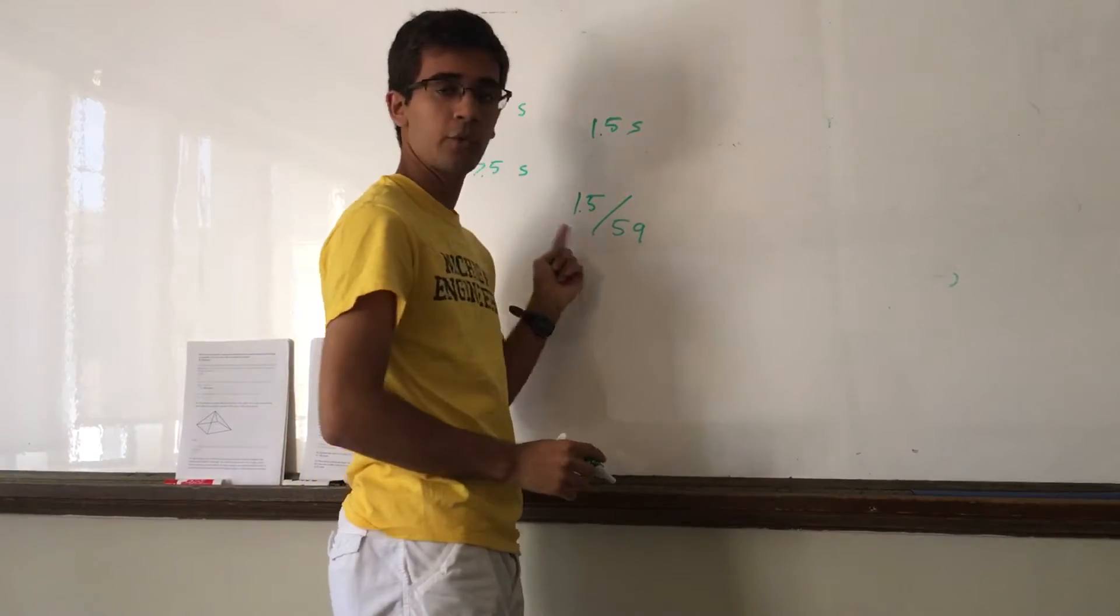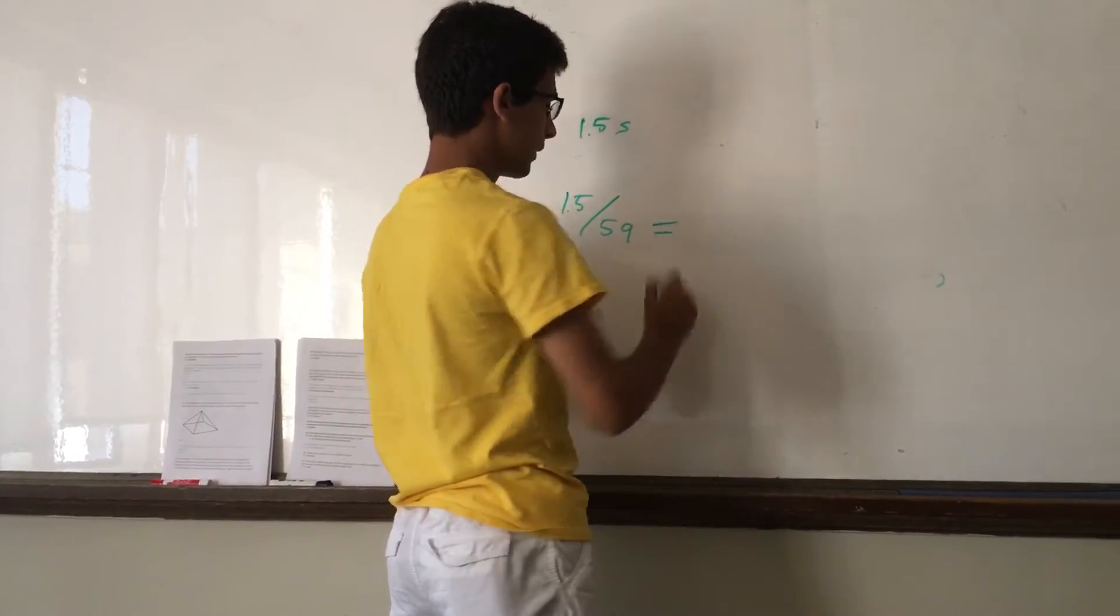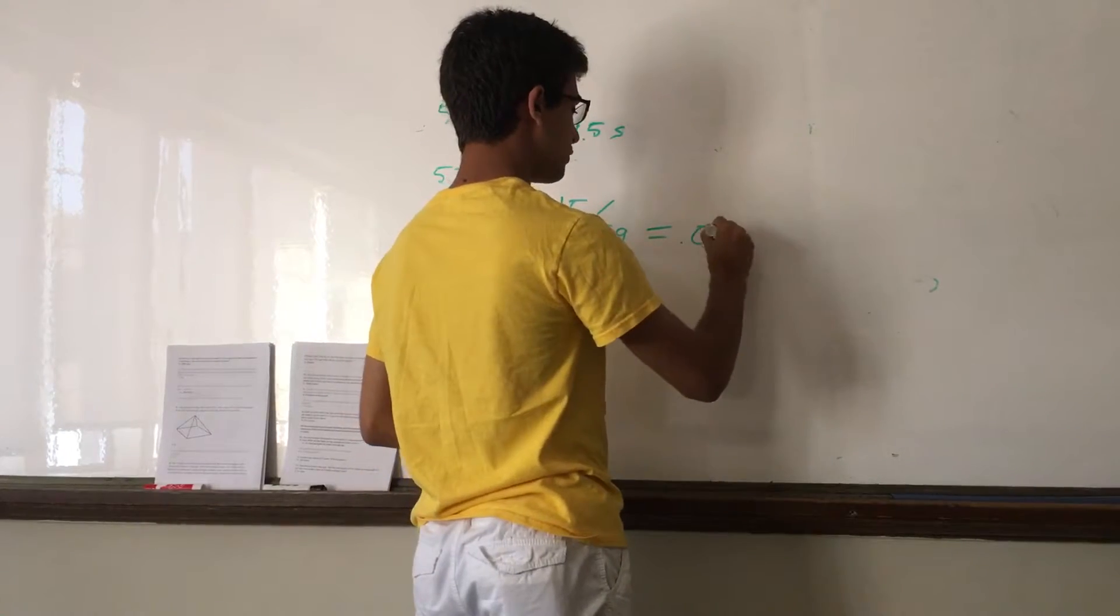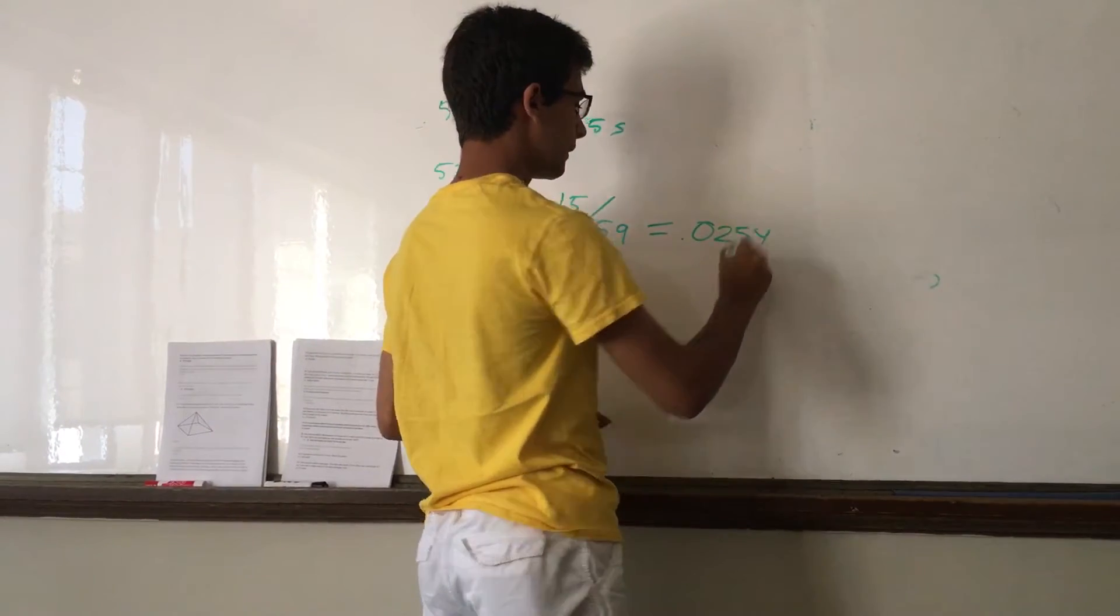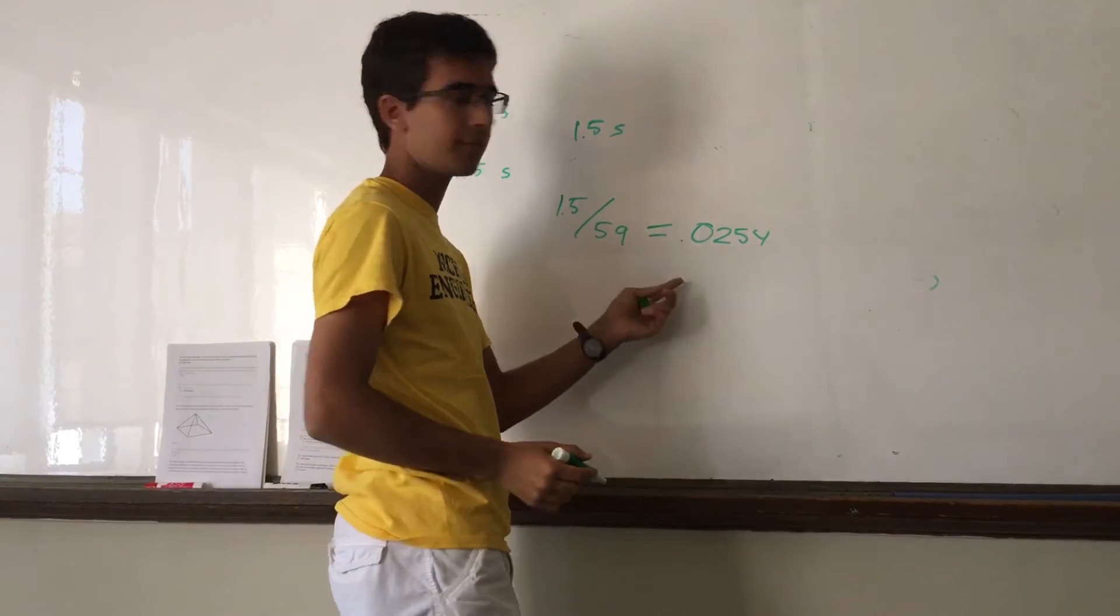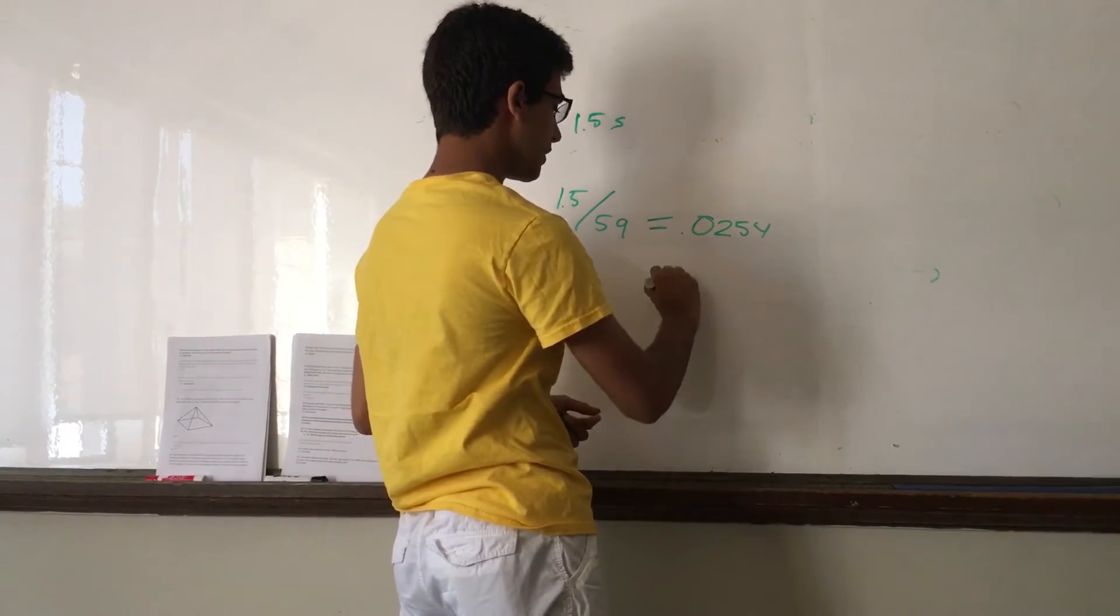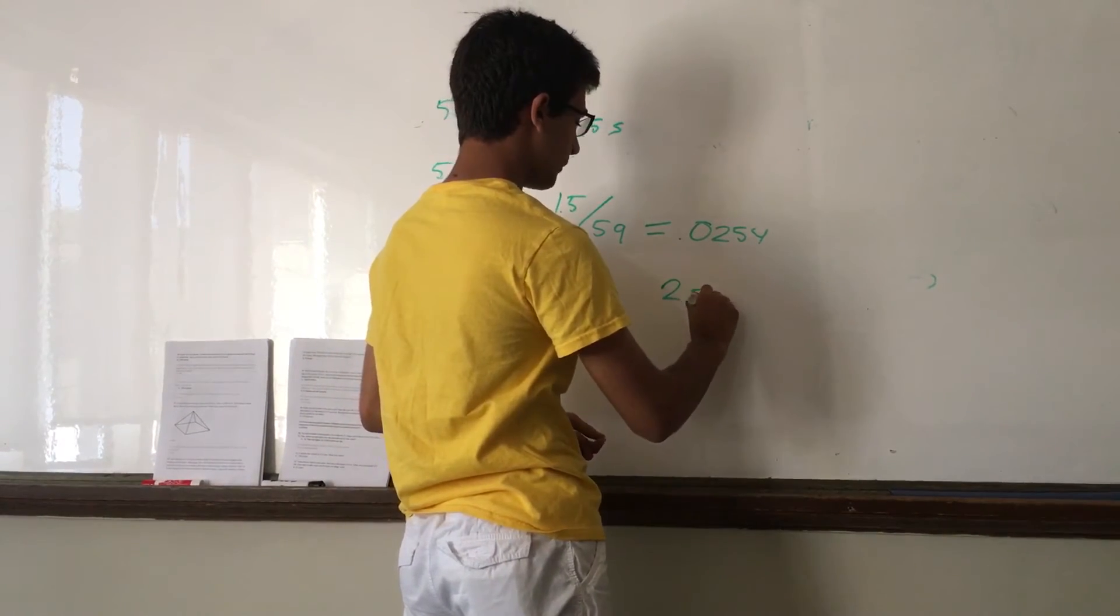So, the percentage 1.5 out of 59, if we calculate this, is 0.0254. However, this is just the proportion. To get a percentage, we need to multiply by 100. So, the percentage is 2.54%.